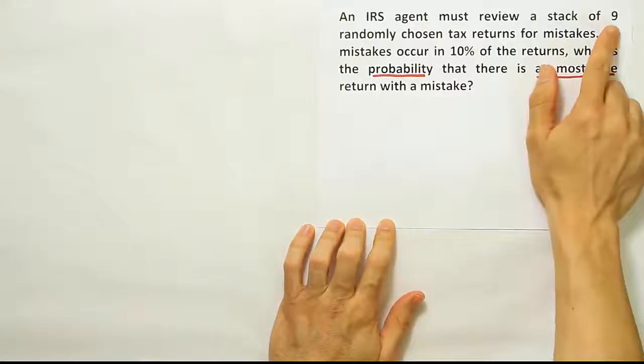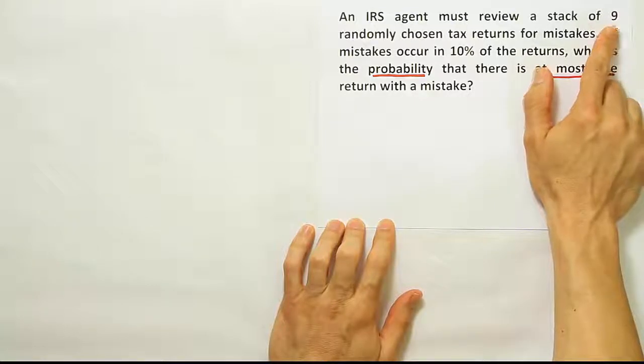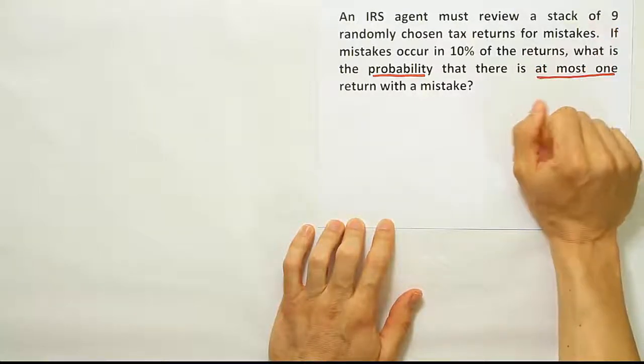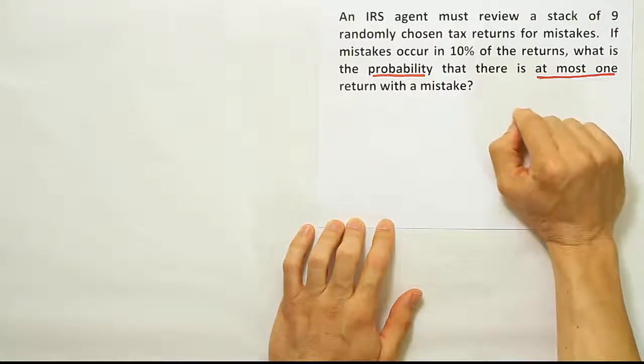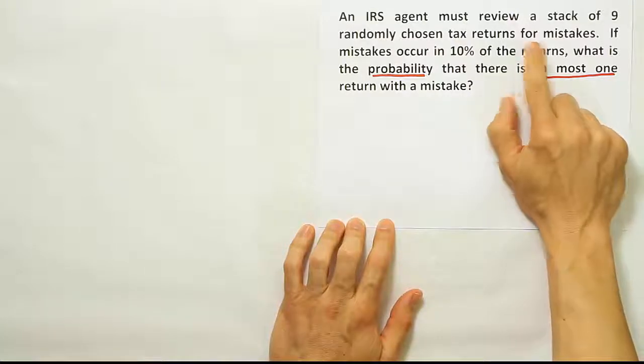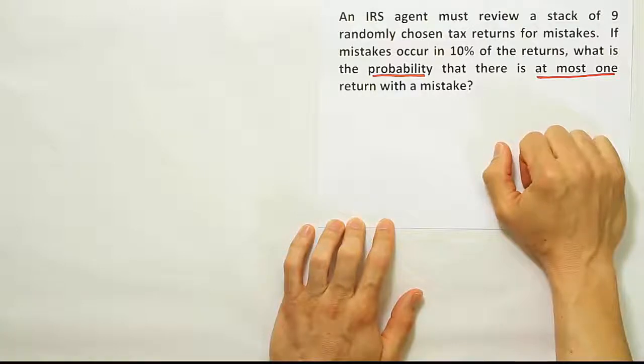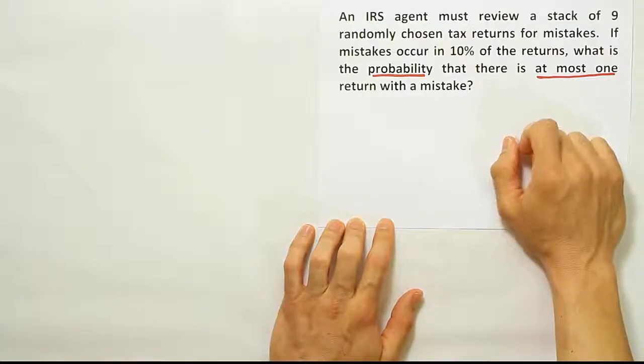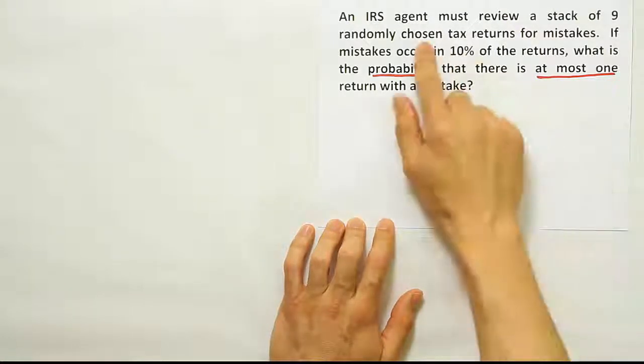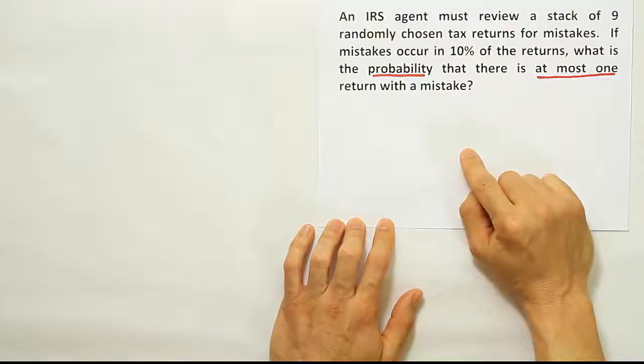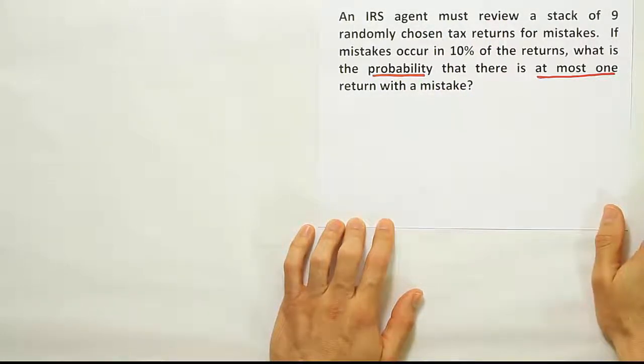First, do we have a fixed number of trials? The answer is yes, we do. Is it an either or outcome, either a success or a failure? That's true because we're looking for mistakes. So either it has a mistake or it doesn't. Are the trials independent? Yeah, I think so because if you have a stack of nine randomly chosen tax returns, the fact that one return might have a mistake should be independent of another return having a mistake.